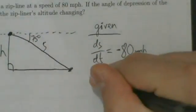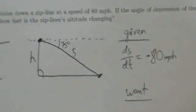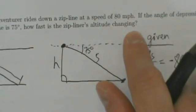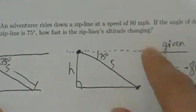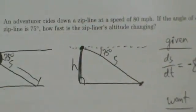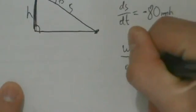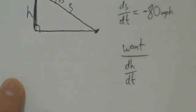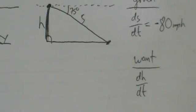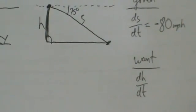So what do we want to know? How fast is the zipliner's altitude changing? Altitude is pretty much just height, so how fast is the height changing? If the height is h, how do we represent the rate of change of the height? That's dh/dt. So really, all we want is dh/dt — not at a specific time, just in general. That's step two.